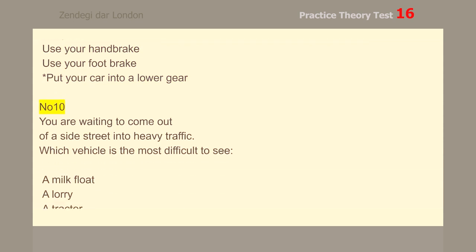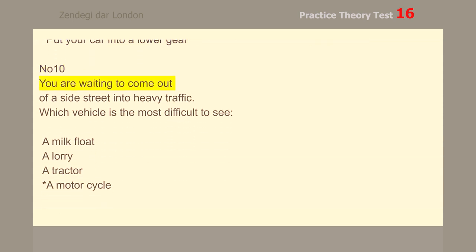Number 10. You are waiting to come out of a side street into heavy traffic. Which vehicle is the most difficult to see? A motorcycle.